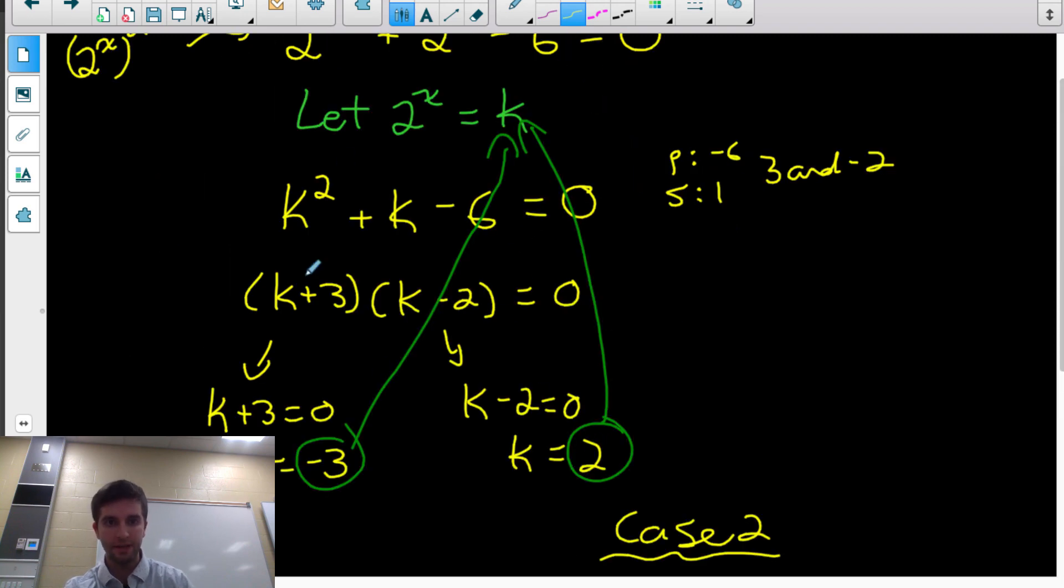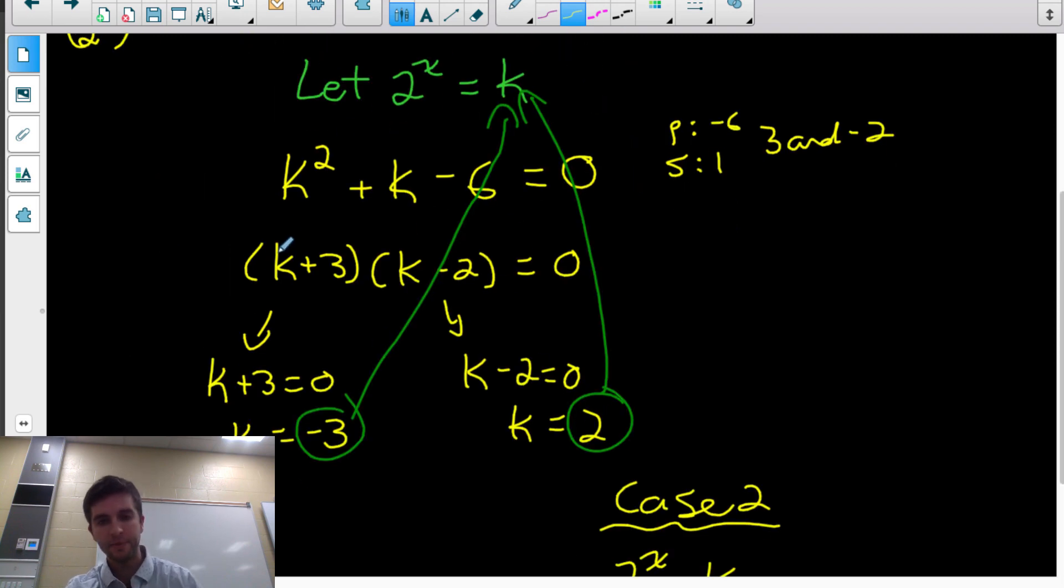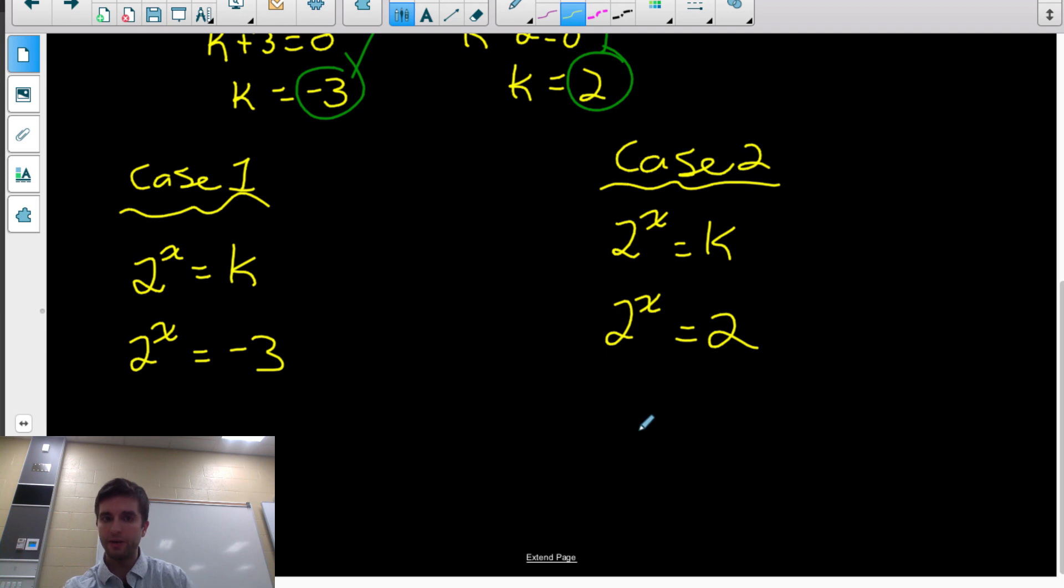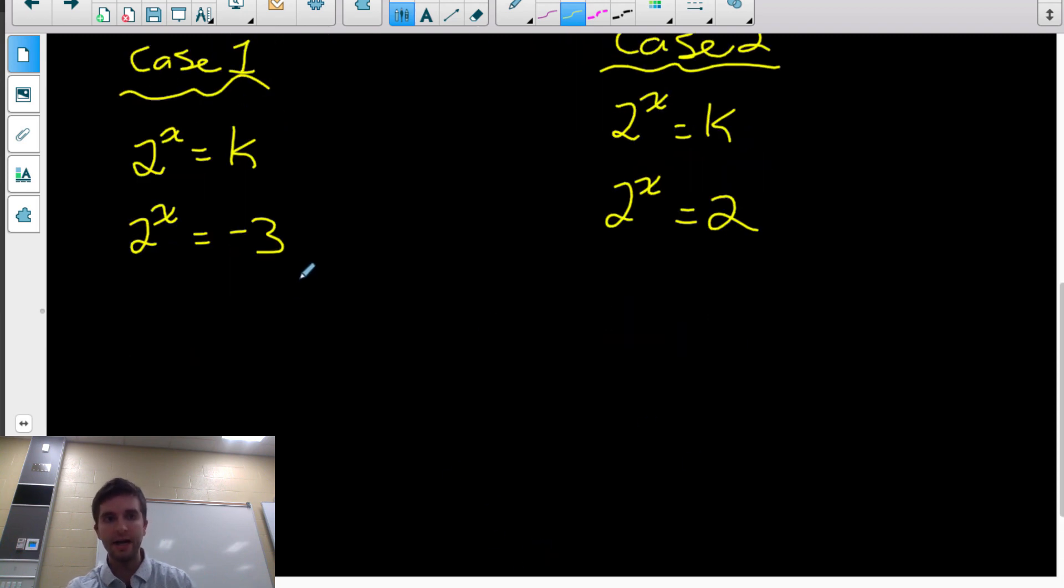So I'm just taking my answers for k, plugging into the let statement that I made earlier. And now I just have to solve both of these equations, and then I'll get my answers for x.